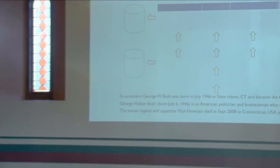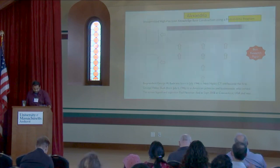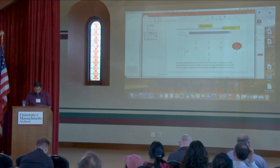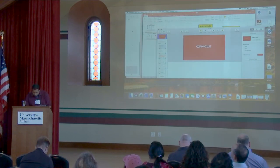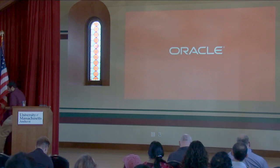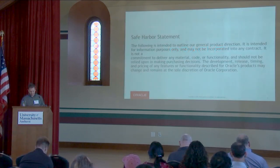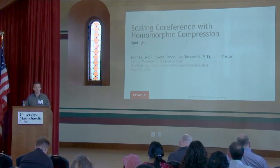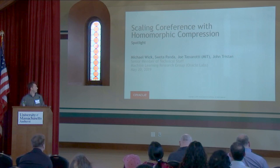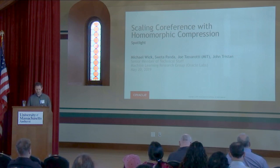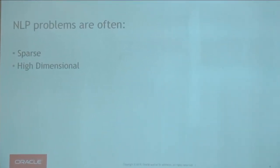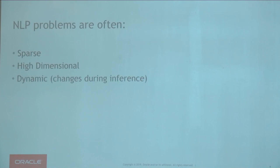No one in this room would deny that NLP problems tend to be sparse and high-dimensional. Usually these representations or properties are limited to the input only. Sometimes, however, we might want to represent sparse, high-dimensional objects that are also dynamic — for example, they might change during inference and we want our representations to accommodate this. This can present computational challenges.